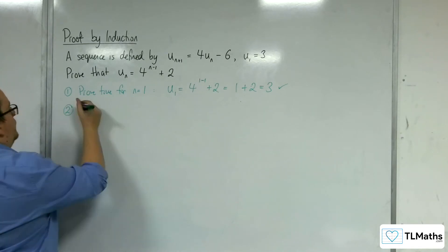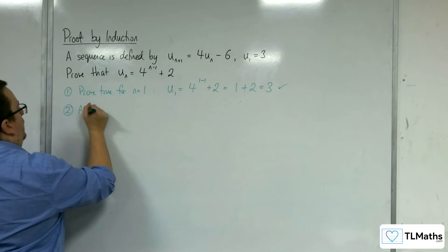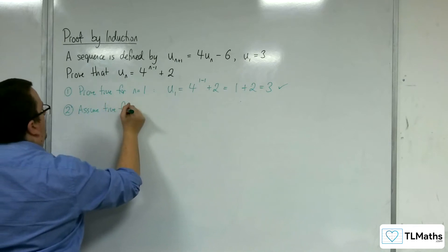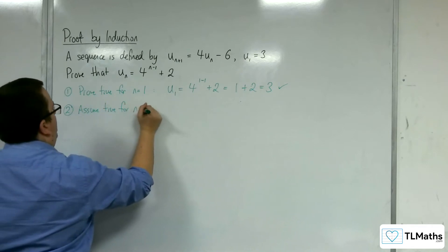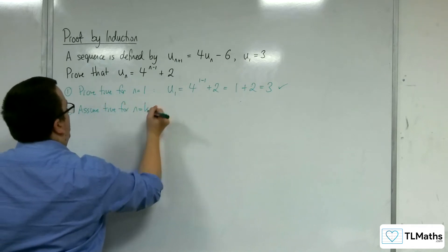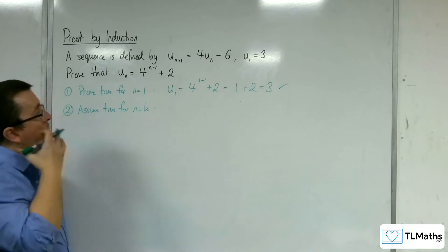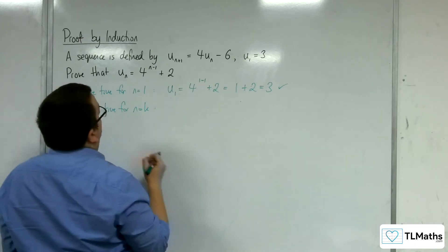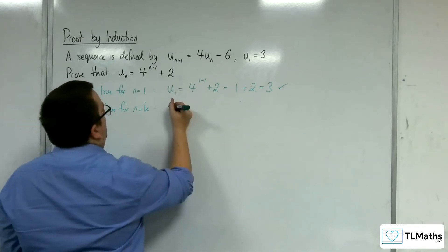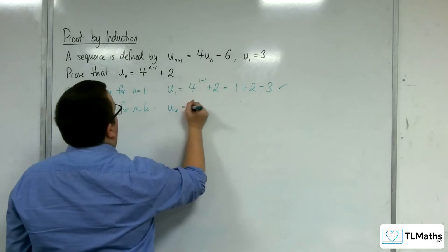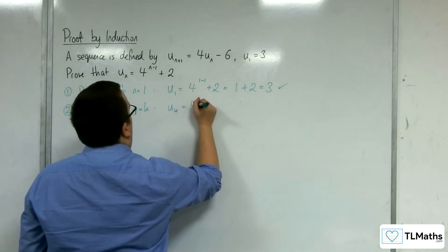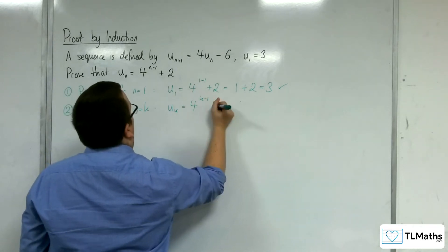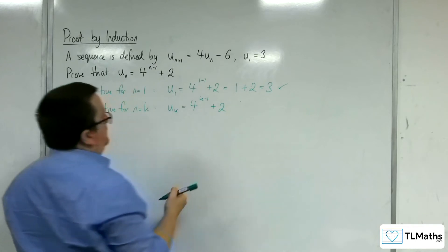Stage 2: assume true for n = k. If that's the case, then u(k) will be equal to 4^(k-1) + 2.